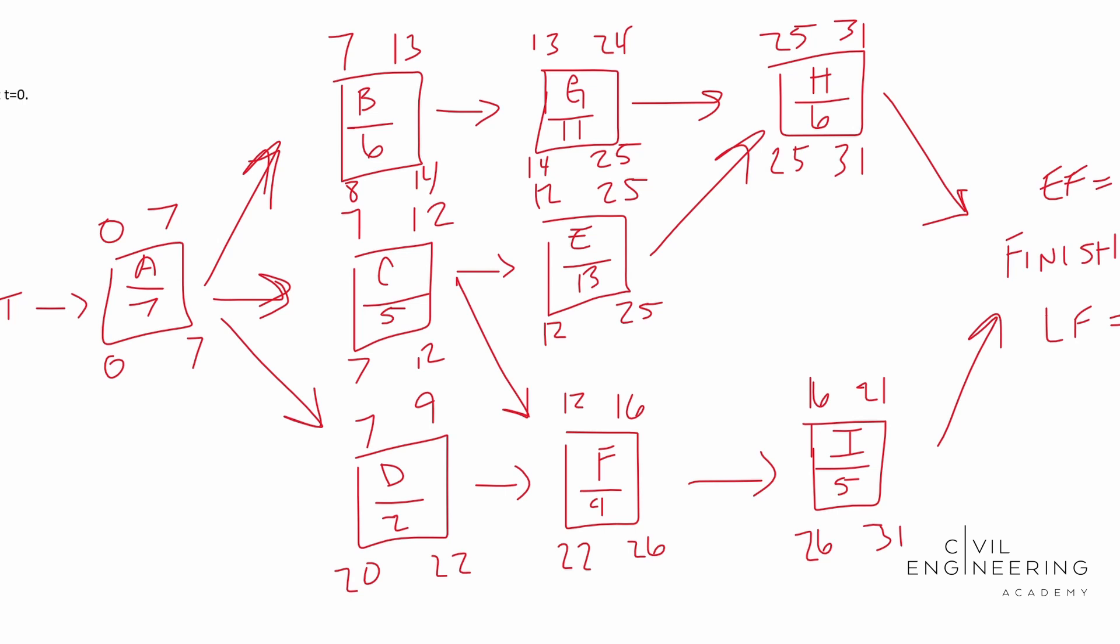So to find your critical path, it's basically where your early start, your early finish, your late start and your late finish are the same numbers. So in this case, we start at start. We have A, we have C, we have E, H, and then to the finish. That is our critical path right there.